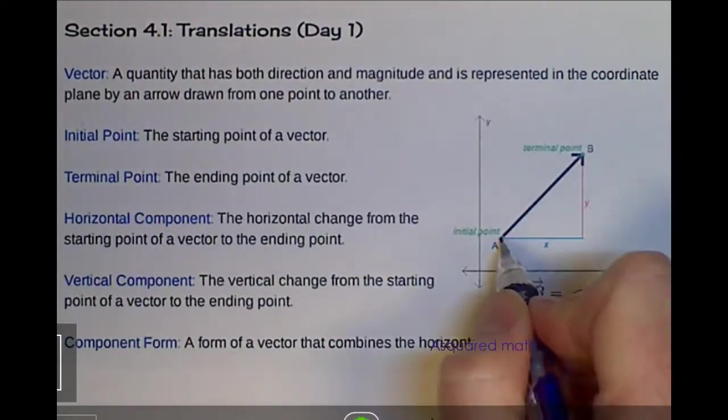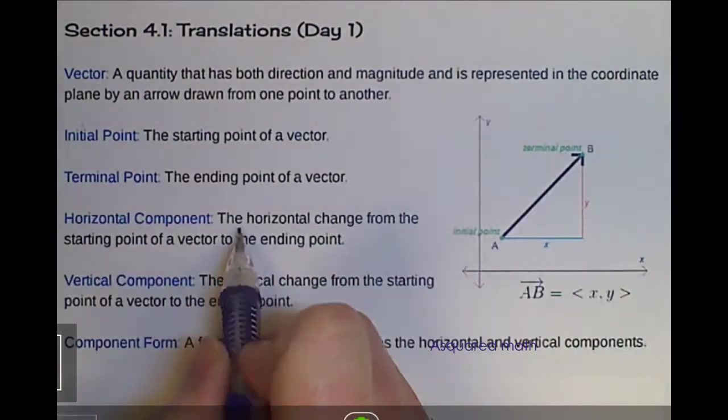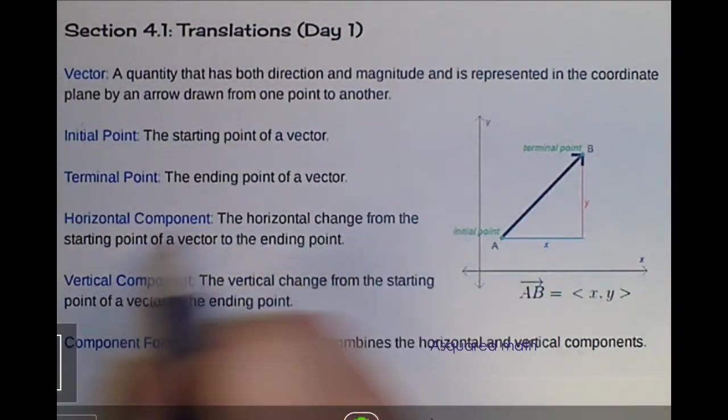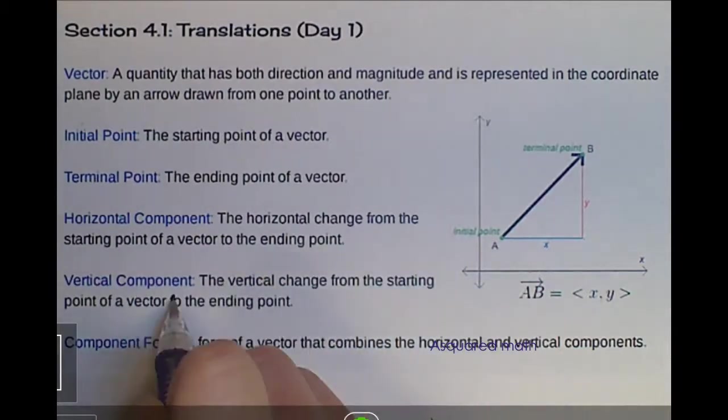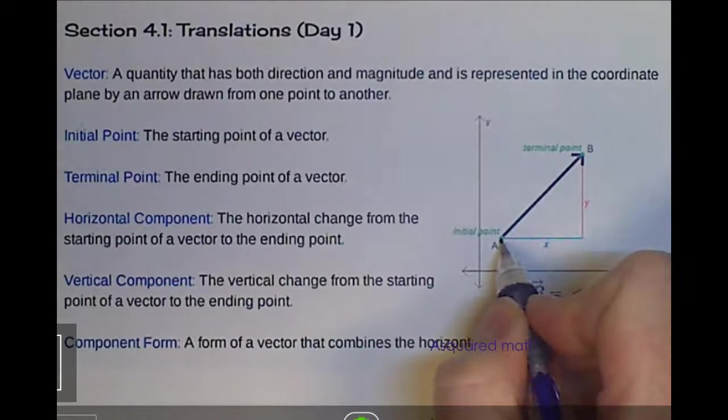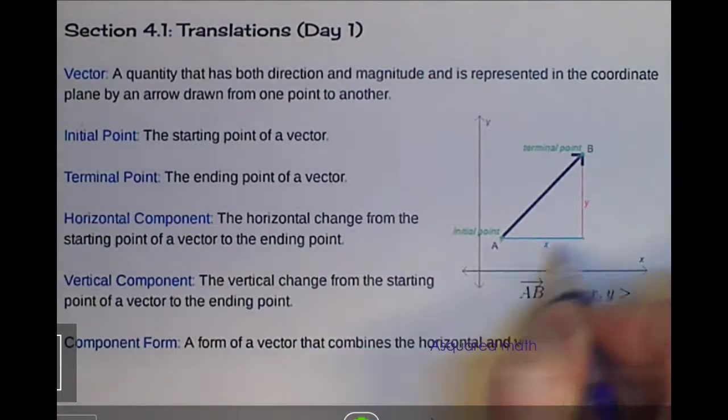The horizontal component is the horizontal change from the starting point of a vector to the ending point. And then you have the same thing that goes on with the vertical direction. So we start here and we end here. So it's our change in our x and then our change in our y.